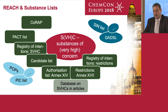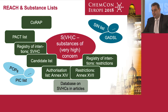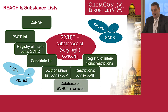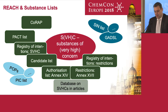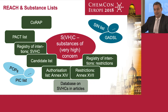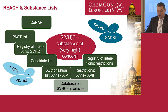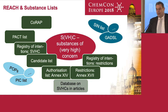The Community Rolling Action Plan and CoRAP are now summed up with additional elements for the PACT list. These were the regulatory lists concerned with or coming out of REACH. There are then some other lists: Sin lists, the Global Automotive Dangerous Substance lists, POPs, PICs, and a lot of other lists coming from other legislation.